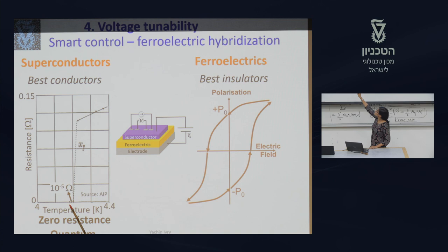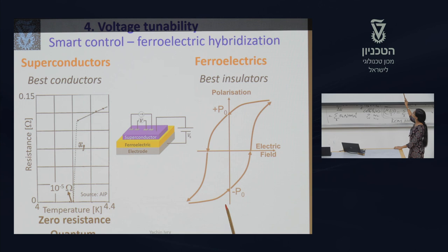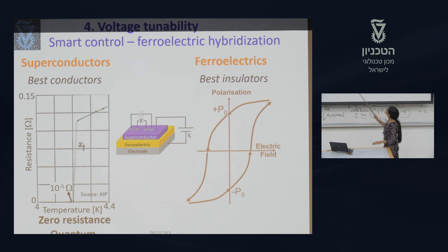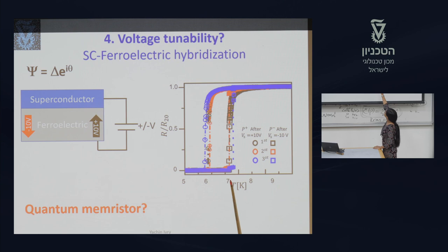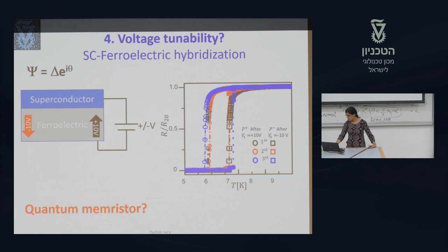Superconductors show resistance going to zero — they are best conductors. In ferroelectrics, you can change the polarization by applying an electric field. We fabricated a device with a ferroelectric layer and a superconductor on top, and found that by changing the electric field we can change the critical temperature at which superconductivity is achieved. By applying voltage, we can tune the quantum devices.